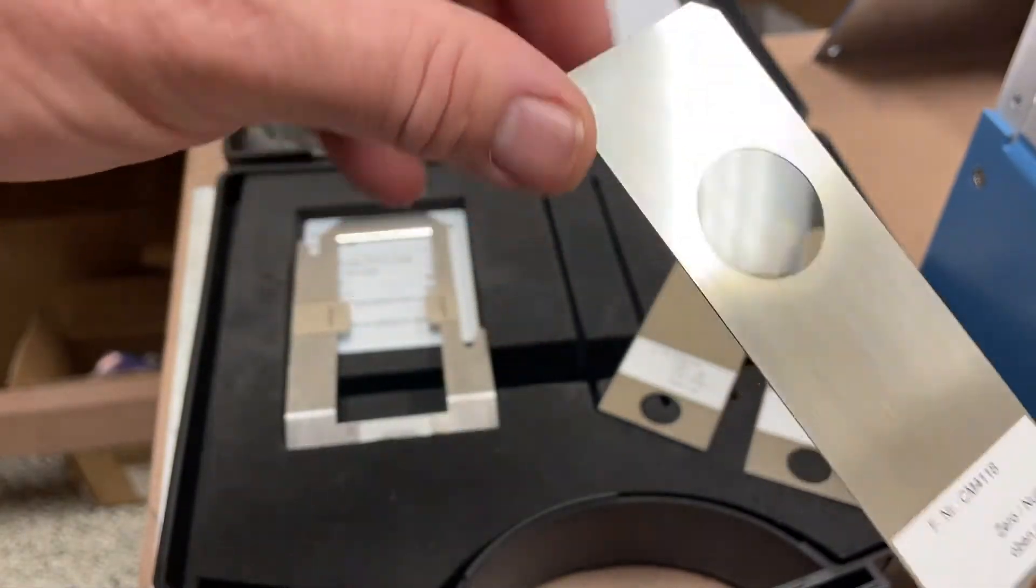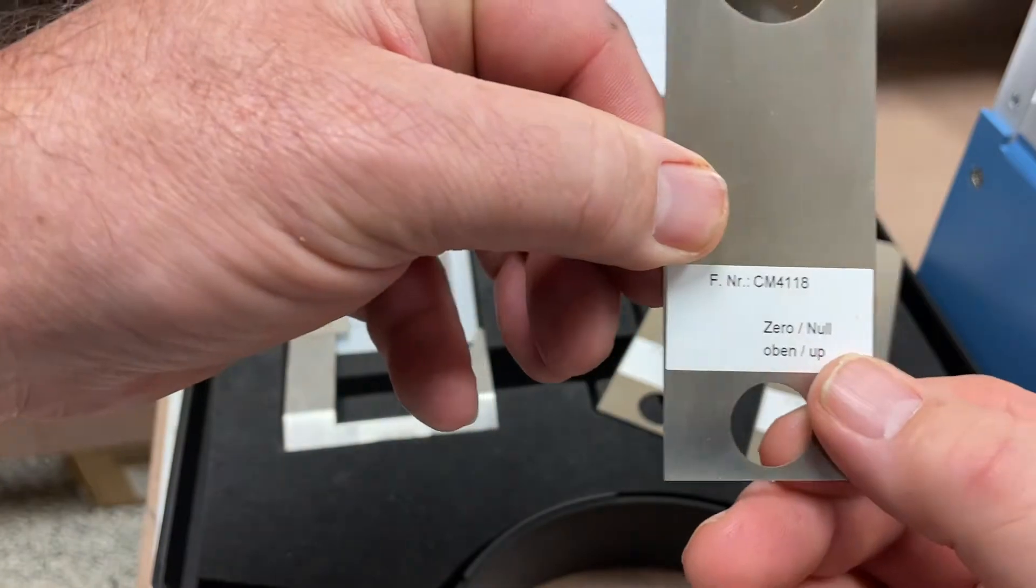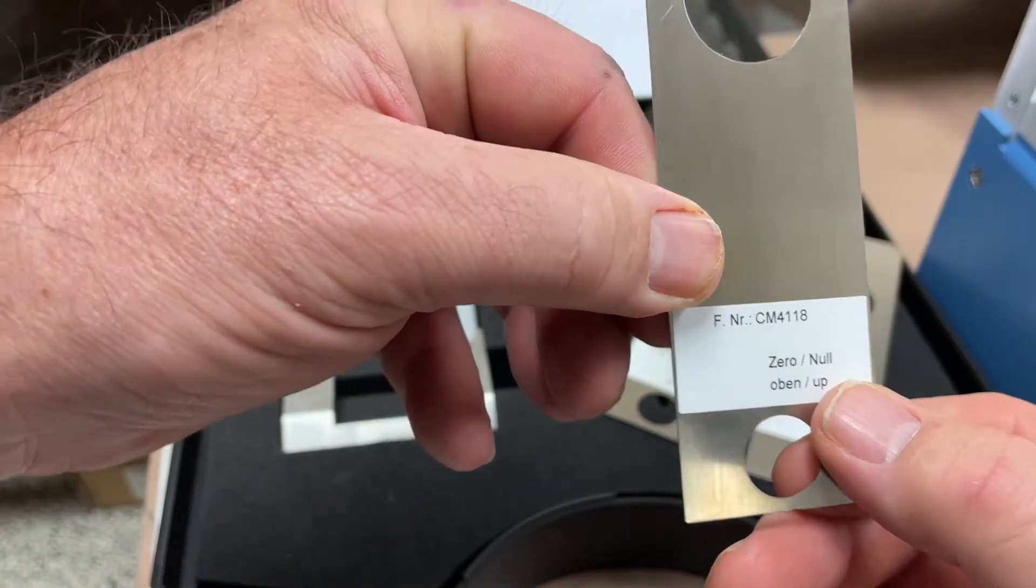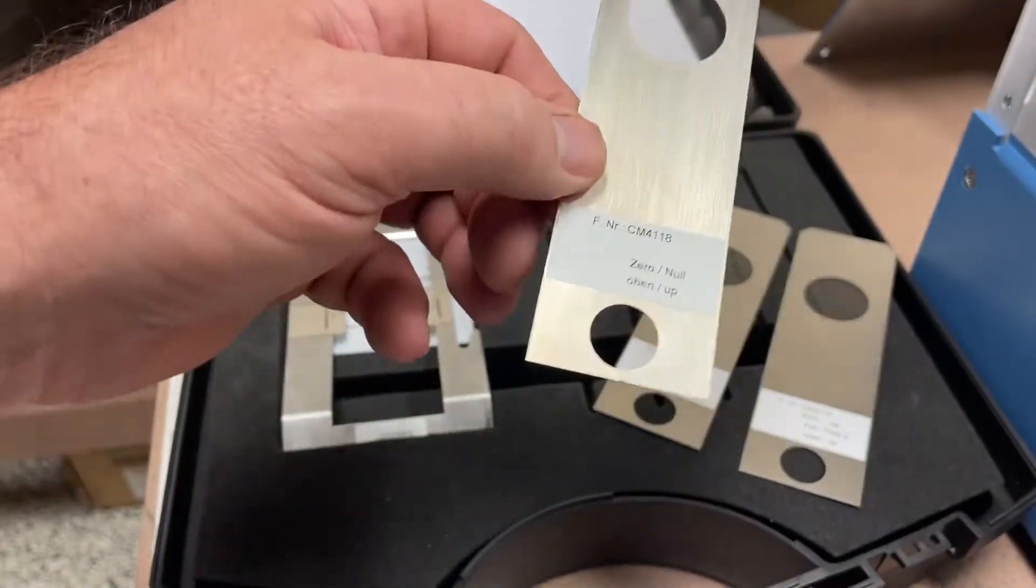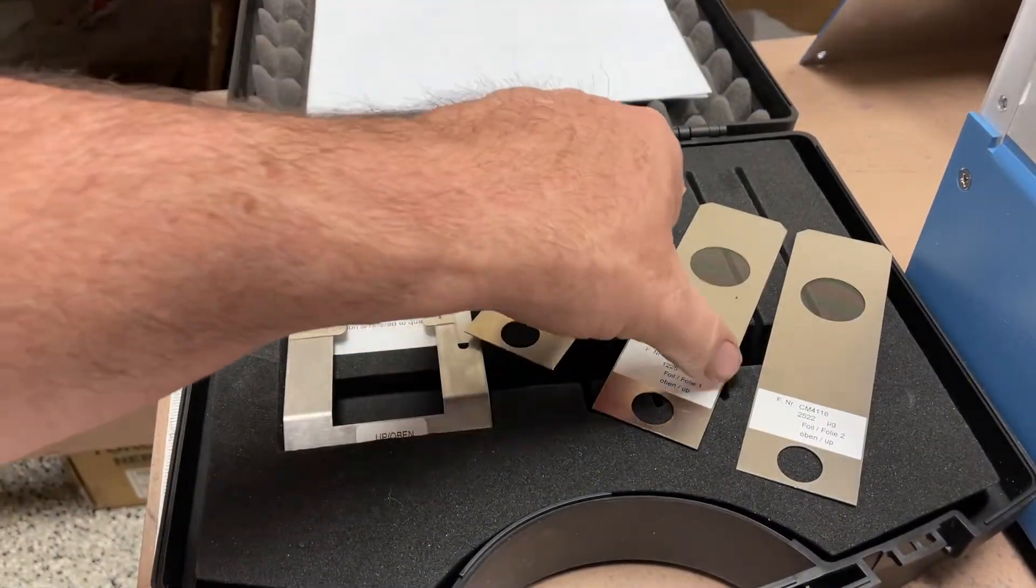This one is labeled zero null, so if you put this into the detector, it should read zero on the front panel of the instrument—zero micrograms.